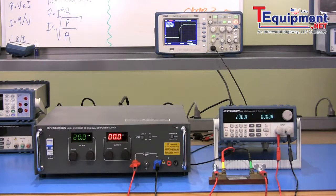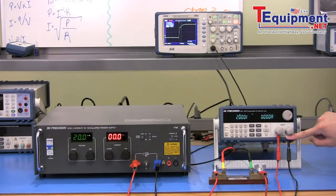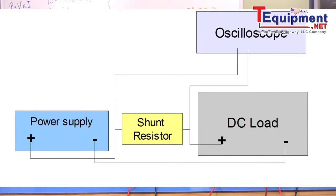Now, with another test lead, connect together the negative terminals of the power supply and the DC load. Your setup should look like this diagram.